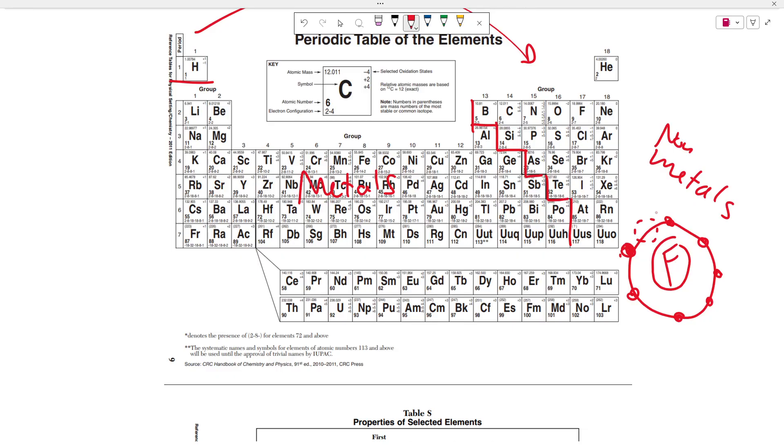So fluorine needs one extra valence electron to complete its shell. Now let's look at sodium, which is a pretty common metal. Sodium has an electron configuration of 2-8-1.